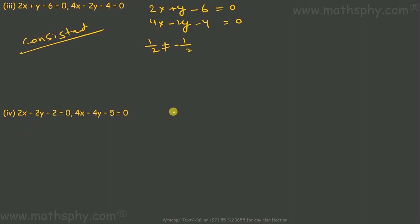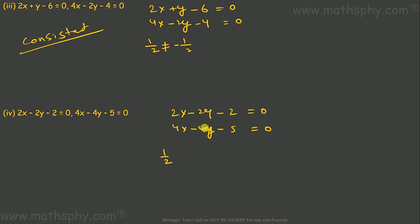For the fourth pair: 2x - 2y - 2 = 0 and 4x - 4y - 5 = 0. a1/a2 is 2/4 which is 1/2, b1/b2 is -2/-4 which is 1/2, and c1/c2 is -2/-5 which is 2/5. The first two ratios are equal but the third is not equal, so this gives parallel lines — meaning inconsistent.